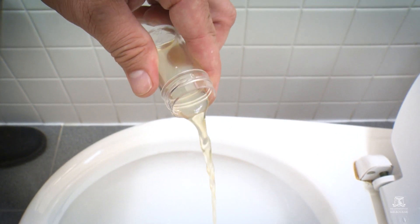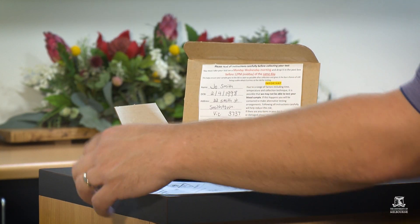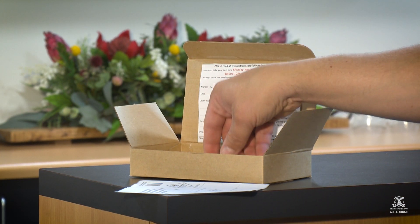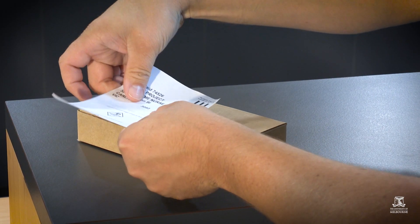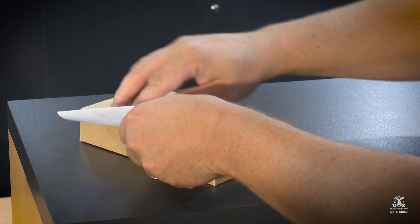Dump the remaining pee in the toilet. Wash and dry your hands again. Place the swab back into the cardboard box. Write your details on the form inside the box lid and use the addressed adhesive label to secure the lid closed.